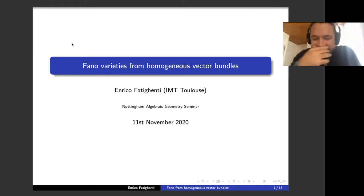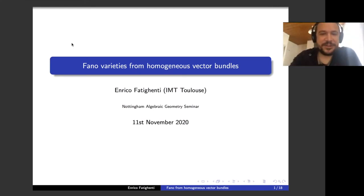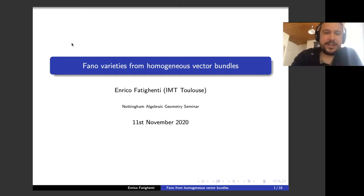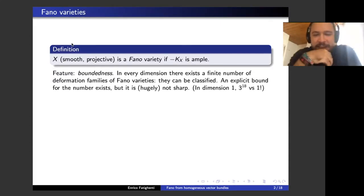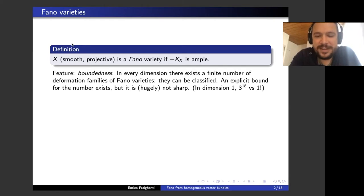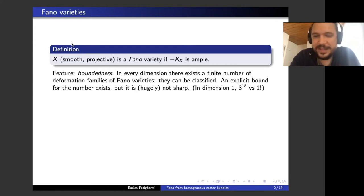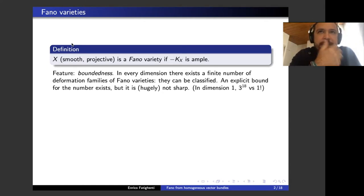Thanks, Liria, and thanks everybody from Nottingham for inviting me to give this talk. The title is 'Fano Varieties from Homogeneous Vector Bundles.' One good thing about this talk is that a lot of people in this community know a lot about Fano varieties, so I'm going to be quite fast on the first slide. This is a project in collaboration with several people, and I will try to mention everybody at the right place.